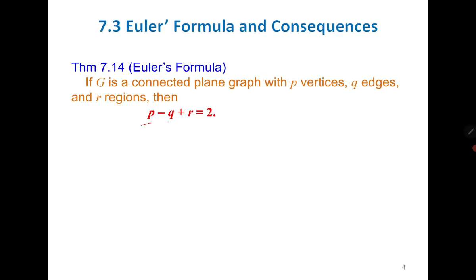Then there comes the Euler formula, which says that the number of vertices minus the number of edges plus the number of faces equals two. It is easy to compute the number of vertices and edges, and from there, using the Euler formula, we can compute the number of faces. Remember, we only use the Euler formula for planar graphs.